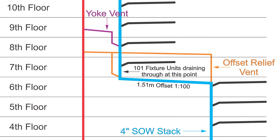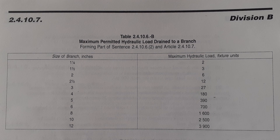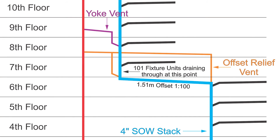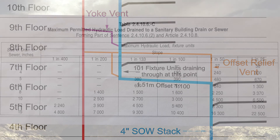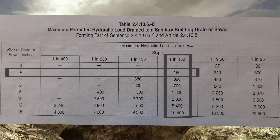In this picture my soil away stack is 4 inches in size, but we need to check tables 24106B and C first. Table 24106B, the branch table, says 4 inch is good to 180 fixture units — I have 101, so I'm good. Table 24106C, the building drain table — notice the grade on the offset is 1 in 100. Looking at 1 in 100, the first option is 4 inch, which I'm already at, and it's once again good to 180 fixture units. So I can still use a 4 inch offset here.